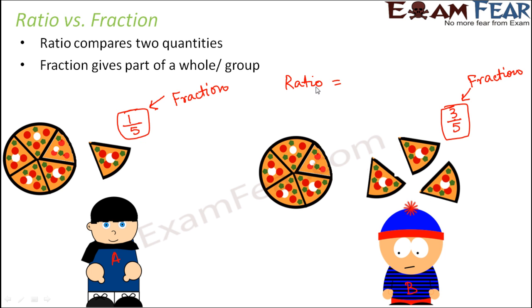How will you find that ratio? Ratio of pizza eaten by B to the pizza eaten by A. How much did B eat? B ate three by five divided by how much did A eat? A had eaten one by five. So three by five divided by one by five, which is equal to three by five into five by one. This is equal to three by one or three is to one.